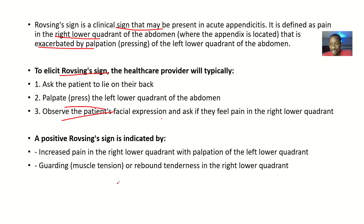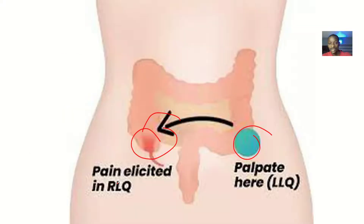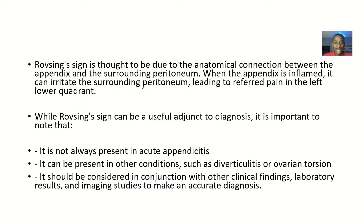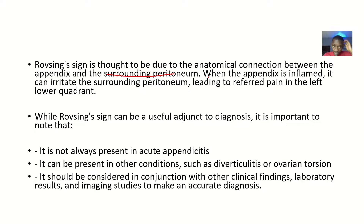There will also be muscle guarding — muscle tension or rebound tenderness — in the right lower quadrant. The Rovsing sign is thought to be due to the anatomical connection between the appendix and the surrounding peritoneum. When the appendix is inflamed, it irritates the surrounding peritoneum, leading to referred pain. Because the peritoneum is inflamed, even palpating the left side causes pain to be felt on the right side.